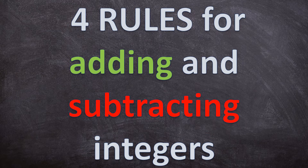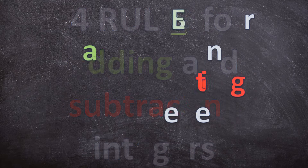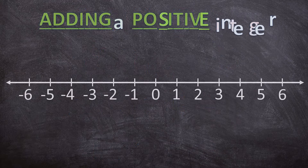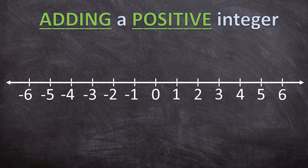Now when we add and subtract positive and negative integers, there are four rules we should keep in mind. Let's look at the first rule.